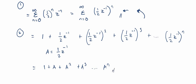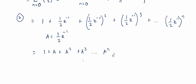As you can see, this is an infinite geometric sequence of the form 1 + a + a² + ... To solve this, we are going to multiply by (1 - a).